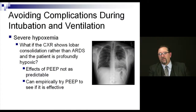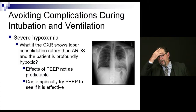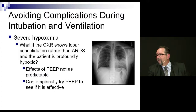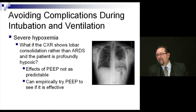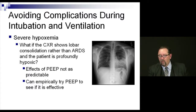For severe hypoxemia, if the chest X-ray shows a lobar consolidation, the effects of PEEP are less predictable. You don't fully know why the patient is hypoxic at that point, so you need to start worrying about other causes: pulmonary embolism, a toxicological issue, or other problems.